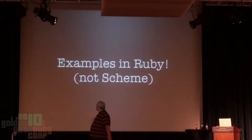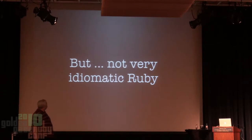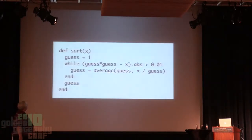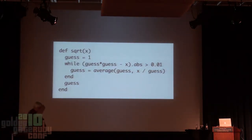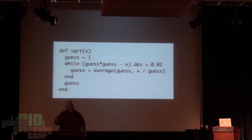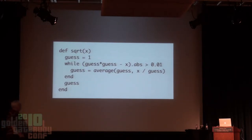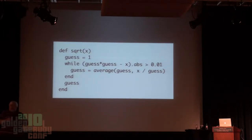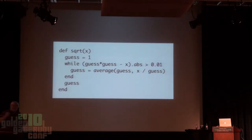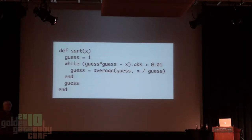The examples are going to be in Ruby, but in very non-idiomatic Ruby—something bizarre and weird you probably haven't seen much of. This is from the first chapter of the book: a square root function. It calculates the square root given any non-negative number by a series of approximations. It starts off with a guess of one. While our guess squared minus our original number has a difference greater than some arbitrary limit, we continue. When that difference is less than some arbitrary limit, we say we're done and return the guess as the square root answer.